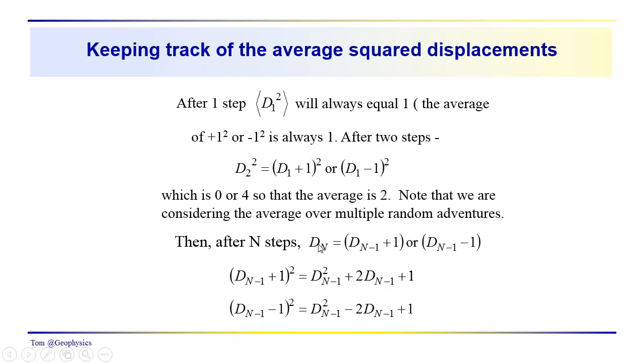d sub N, there are two possibilities. You have d sub N minus 1, and you could either go to the right, plus 1, or to the left, minus 1. So d sub N minus 1 plus 1 squared equals d sub N minus 1 squared plus 2d sub N minus 1 plus 1. Then we have d sub N minus 1 minus 1 squared, which equals d sub N minus 1 squared minus 2d sub N minus 1 plus 1.